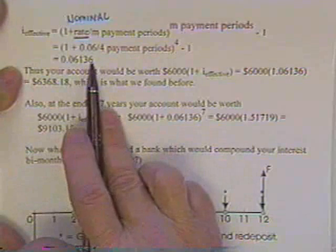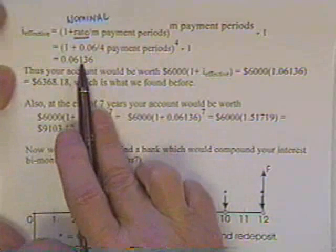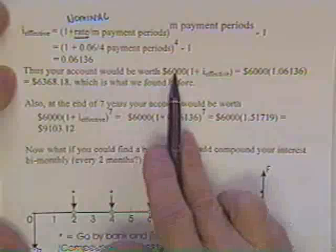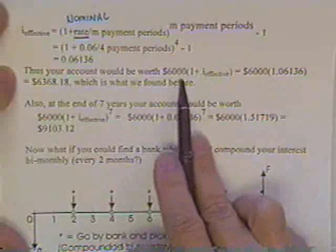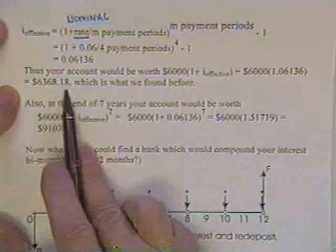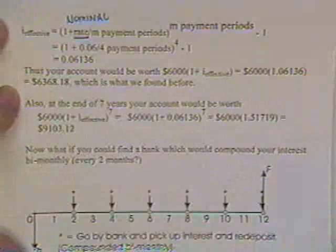He gave me 6.136 percent interest as opposed to 6 percent. Thus my account is worth, using the same equation as before, $6000 times (1 + I_effective) = $6368.18, same number we found previously.